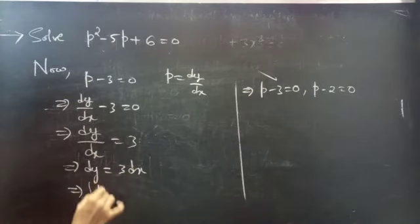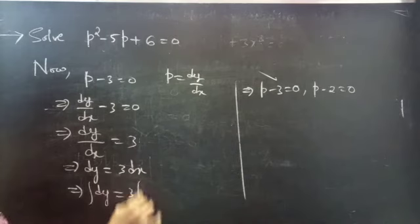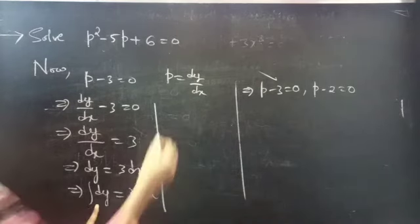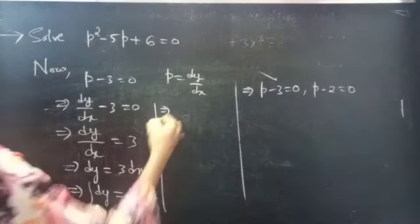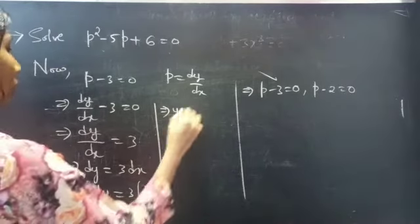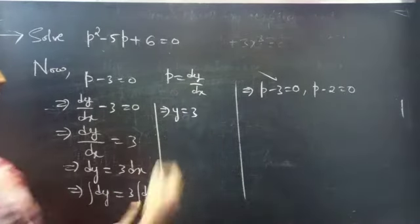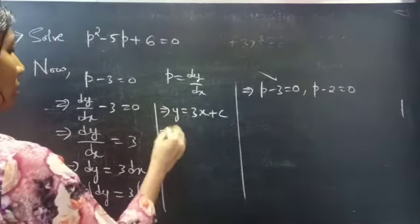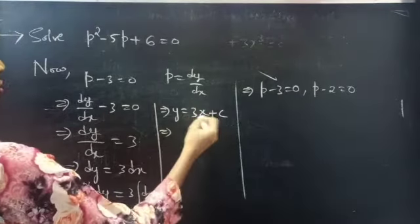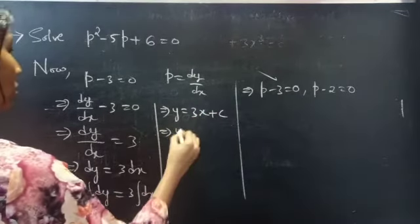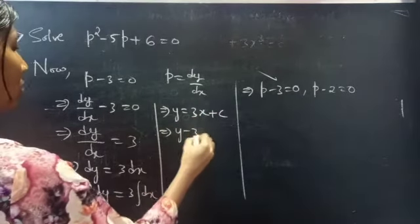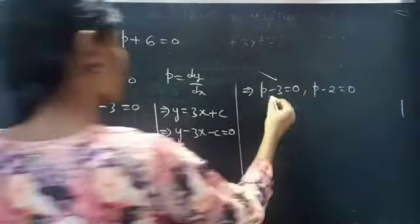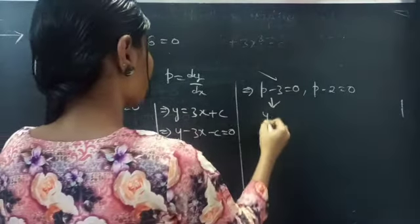Now, integrate on both sides. Then, integral dy is y equals to 3 into integral dx is x plus c. Take these 2 terms to LHS, you will get y minus 3x minus c equals to 0. So, this is the solution for P minus 3 equals to 0.